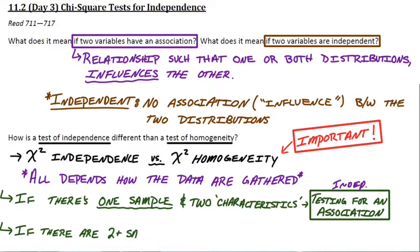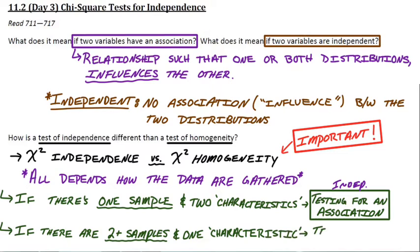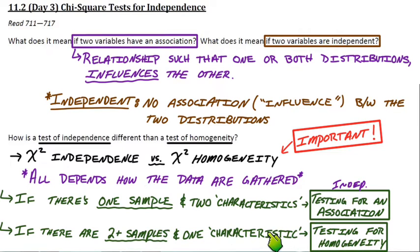For homogeneity, if there are two or more different samples — not just one overall one — and only one characteristic, that's going to be the test for homogeneity. For example, if we sample plain M&Ms, peanut M&Ms, and pretzel M&Ms, that's three different samples and our one characteristic is the distribution of color. We want to see if they all come from the same distribution — if they're homogenous. This is a really important distinction between a test for independence and a chi-square test for homogeneity.